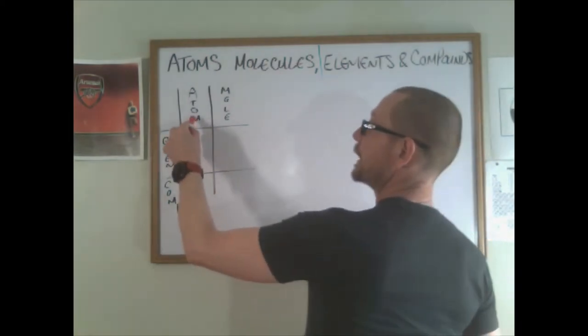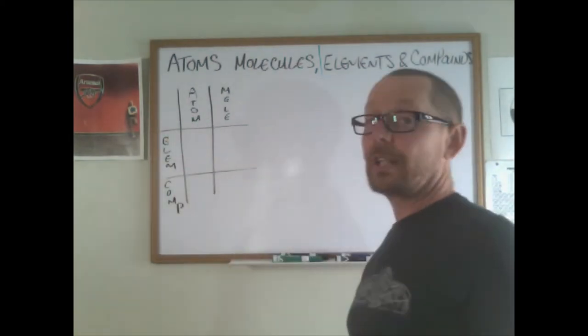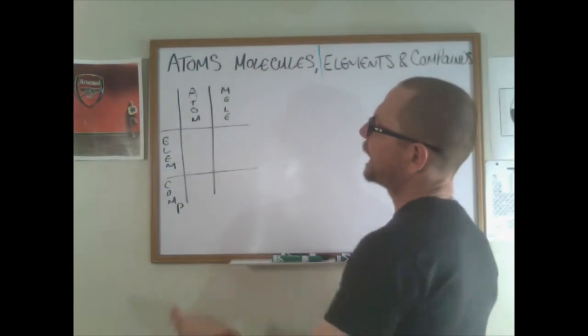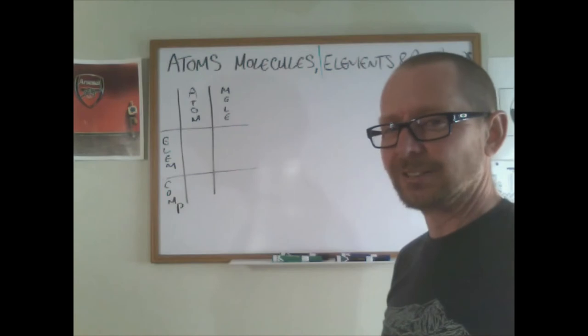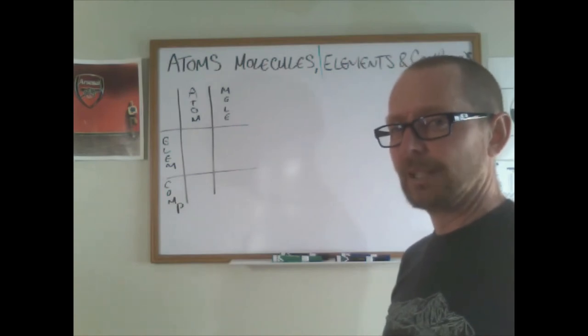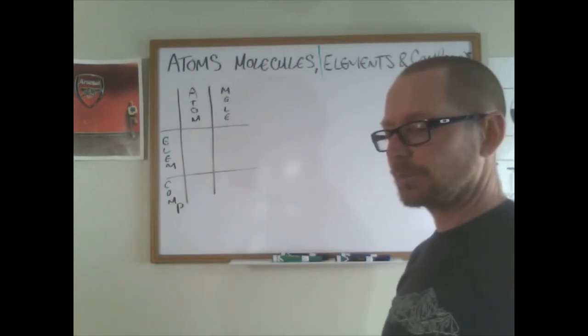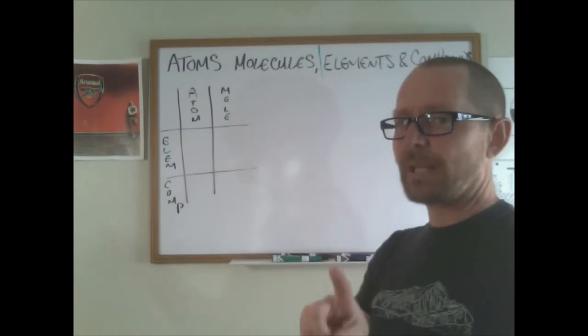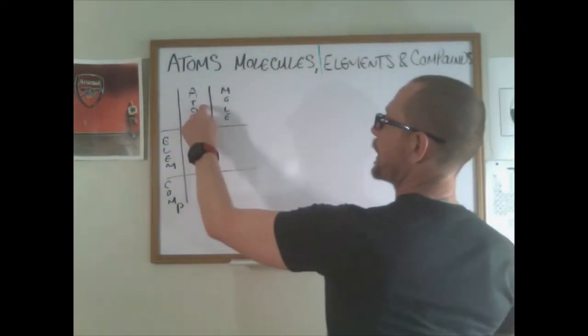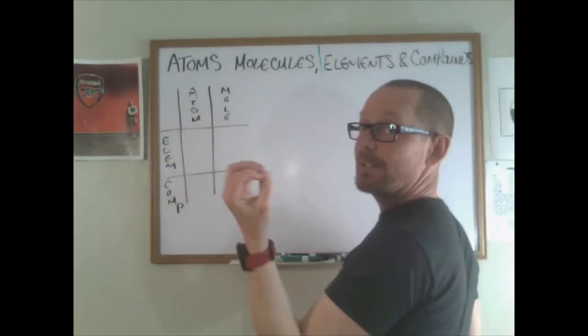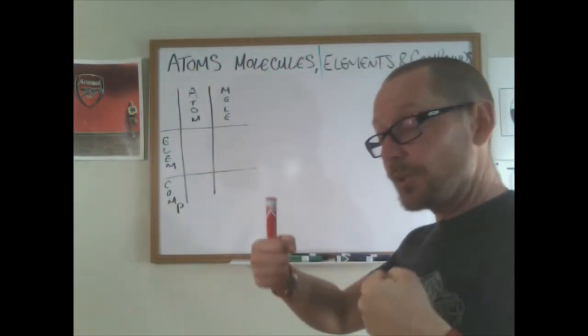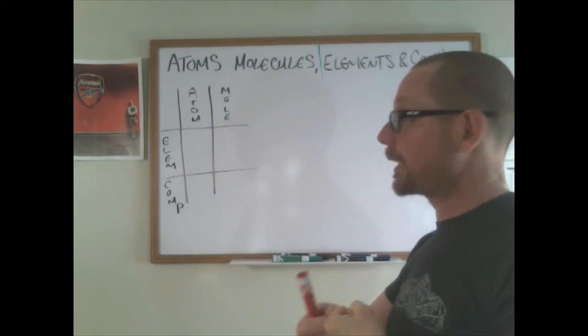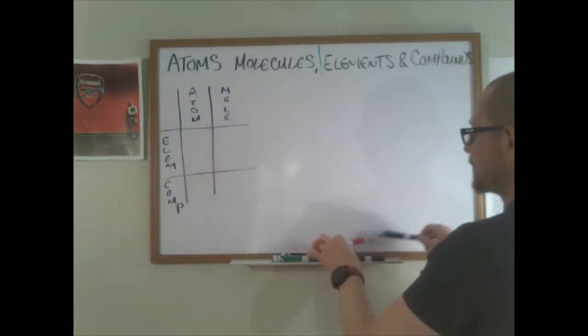And so the question is, whereabouts do we stand when we do these things? Can you be an atomic element? Yes. Can you be an atomic compound? Yeah, it's a special kind of mixture, but it means not chemically bound together. Atom, individuals. Molecules, chemically bound units of atoms.